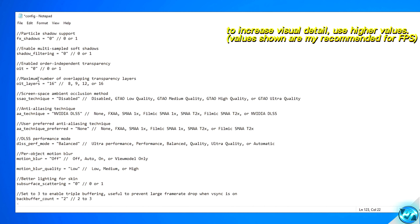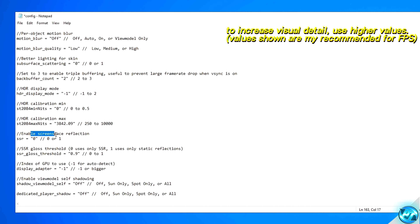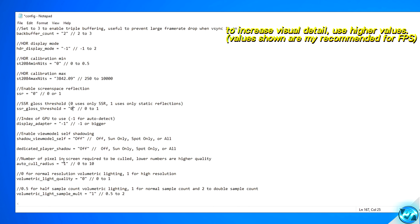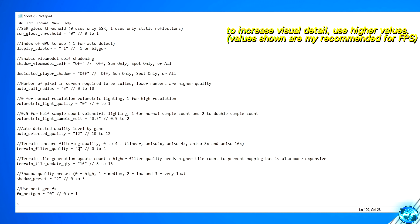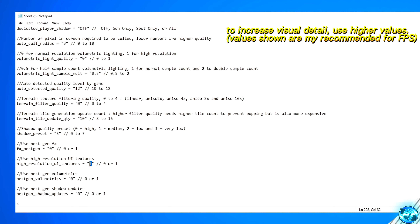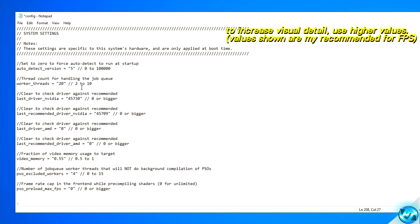Scroll down further to Maximum Number of Overlapping Transparency Layers and change this to a value of 10. Navigate down to the HDR options — set Enable Screen Space Reflection to 0 and SSR_Gloss Threshold directly to 0. Scroll down to Auto_Cull Radius and set this to a value of 3. Volumetric Light Quality set to 0. Volumetric_Light_Sample set to 0.5. Terrain Texture Filtering Quality set to 0 or 2. Terrain Tile Quality set to 10. Shadow_Preset: set to 2 for Low, or 3 for Very Low. High Resolution UI Textures: set to 0. Scroll to the bottom and set video memory usage to a value of 0.55.